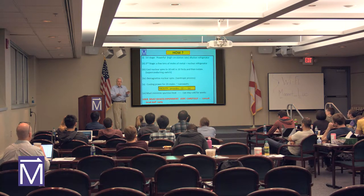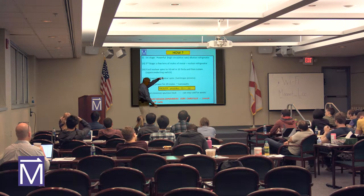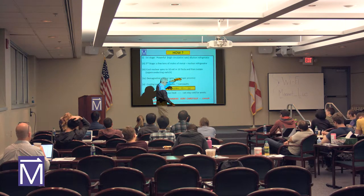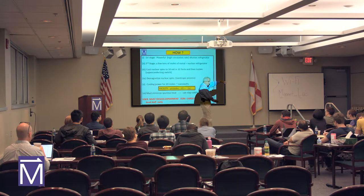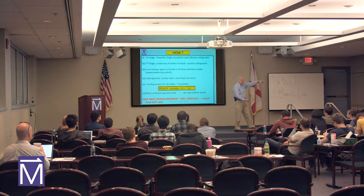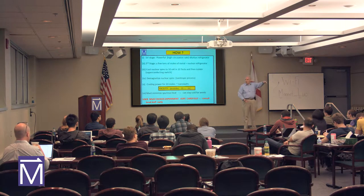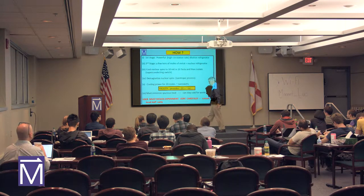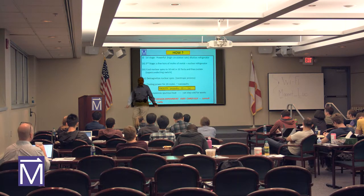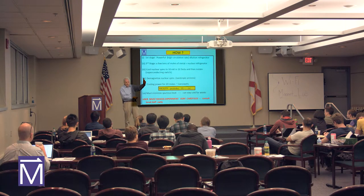We take that as a first step. We connect it to a long sample of very pure copper or another metal. Copper is a nice example because it has nice nuclear spins. Nuclear spins don't interact in order until you get to sub-microkelvin temperatures, so it's a good paramagnet. You cool those nuclei down to, say, 10 millikelvin and 10 tesla — piece of cake.